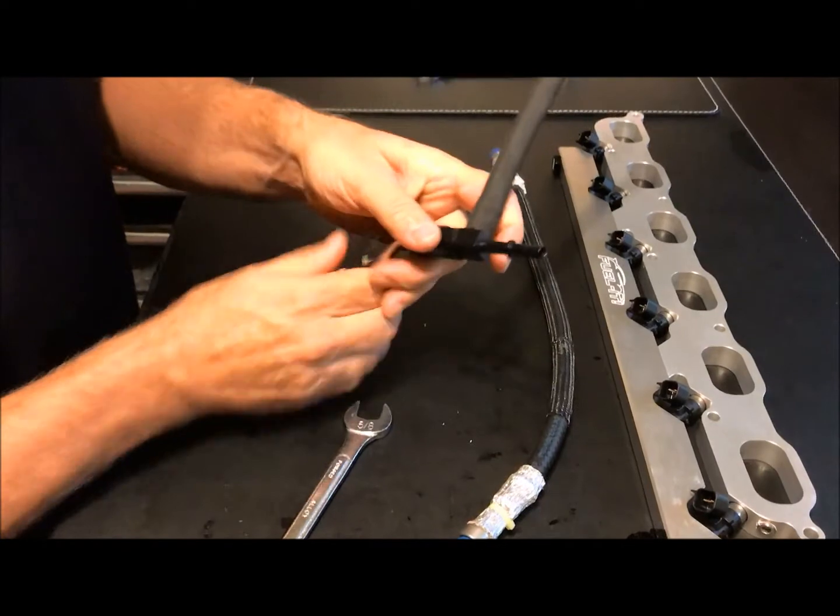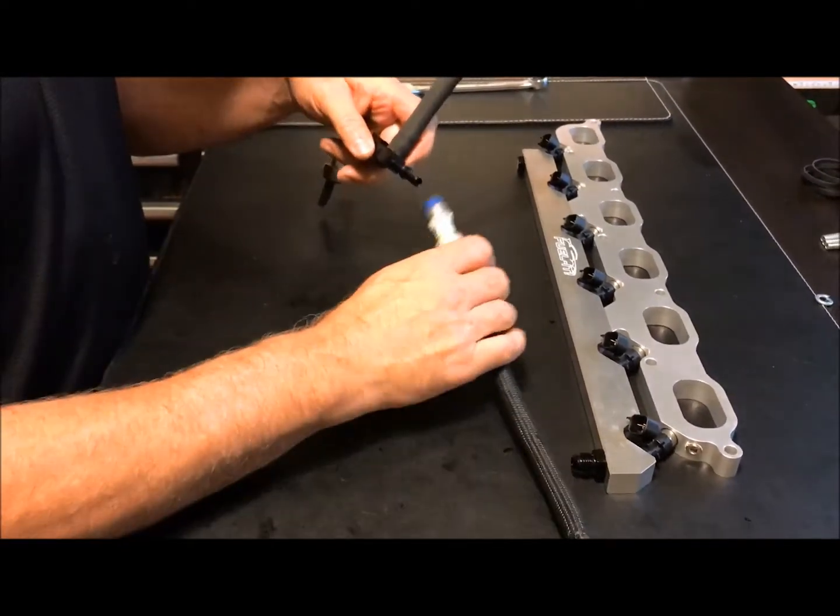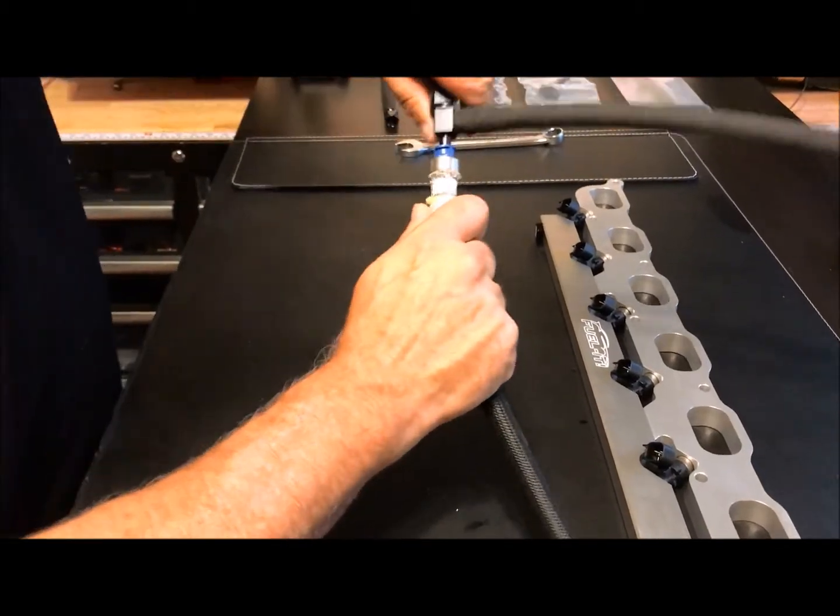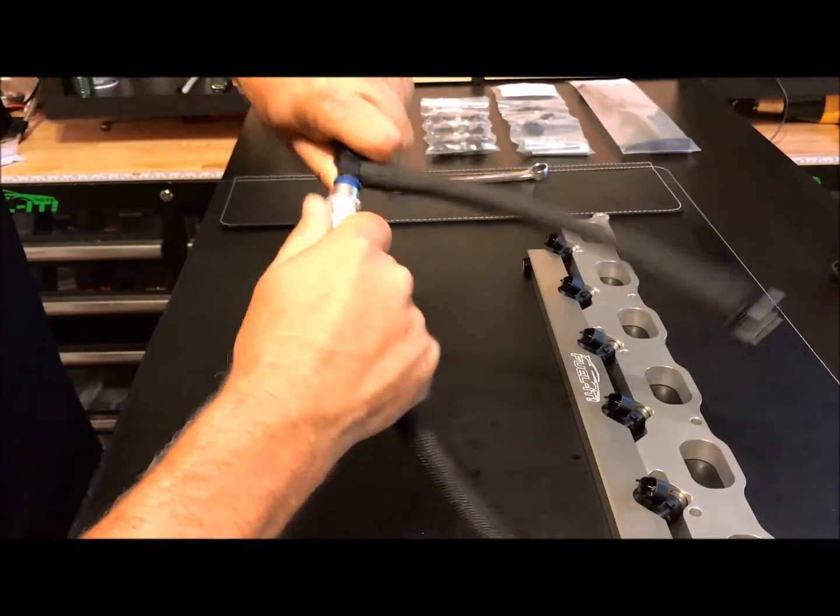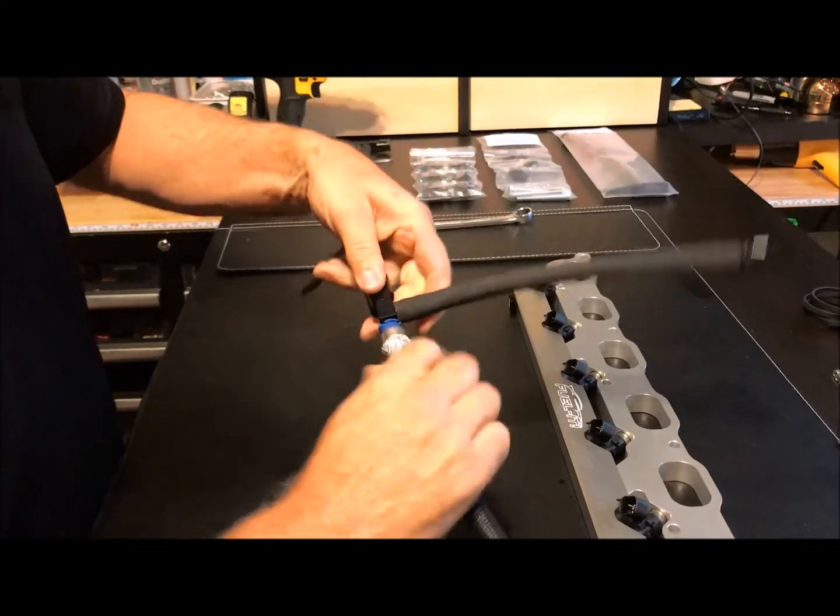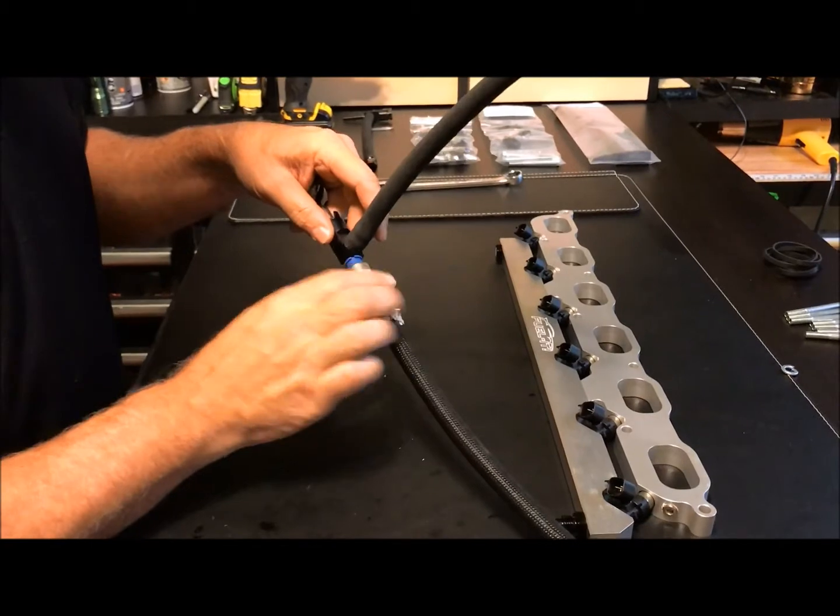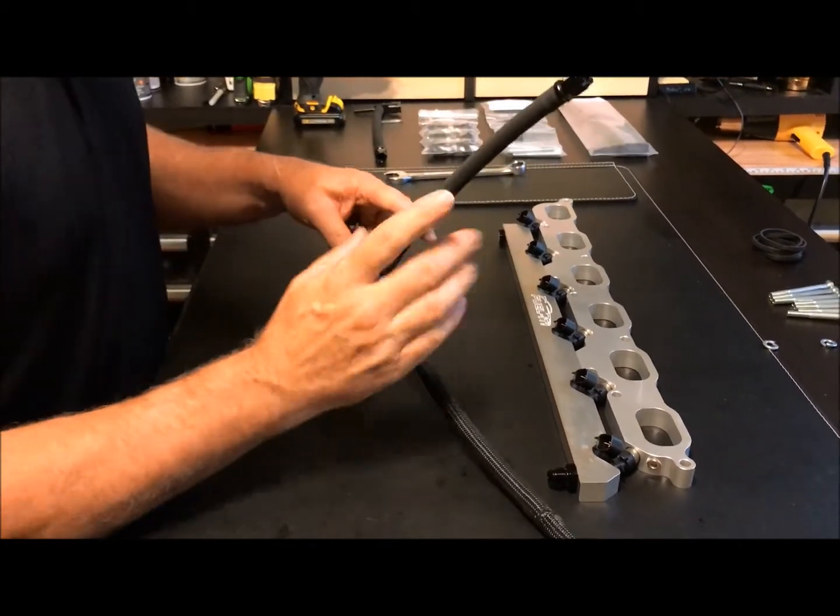So, now we've got a good, secure lock. And, then, the stock LPFP supply line just literally clicks in place like so. Yours may also have a little gray clip that goes around there. I've seen a lot of times they do. Sometimes they don't. So, anyways. When you go to take that off, these are a little bit of a bugger.